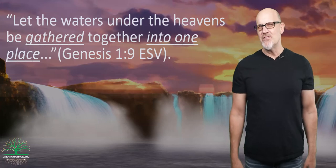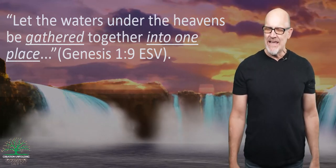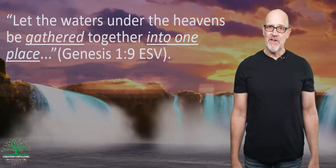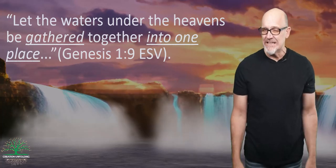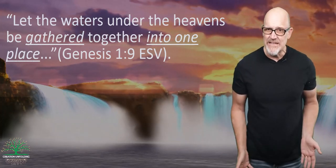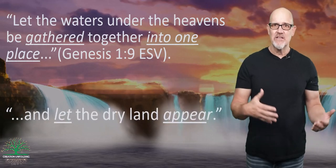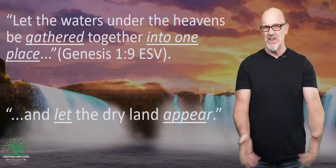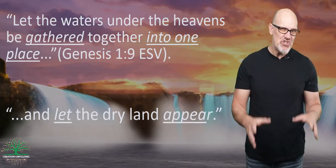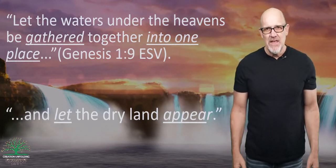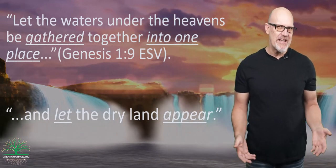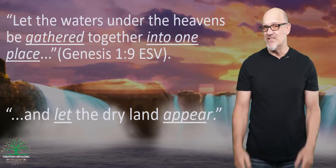In Genesis 1:9, God says, 'Let the waters under the heavens be gathered together into one place.' This is a clear manipulation of liquid, seemingly coalescing into a single body under the influence of gravity. The text then says 'let the dry land appear,' suggesting an upward vertical movement and the shaping of what was hidden under the waters. The creation week does not seem to have been a series of static events — it was very dynamic.